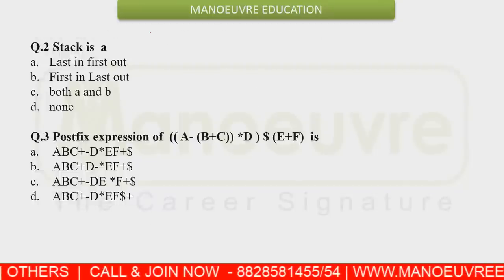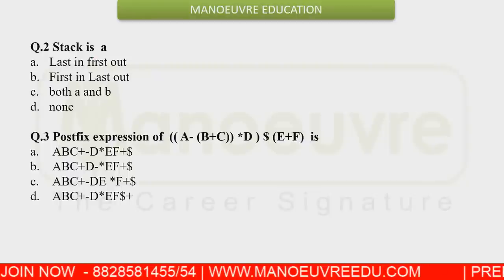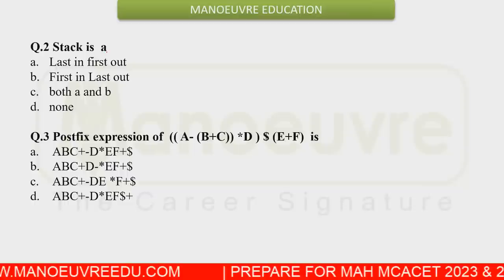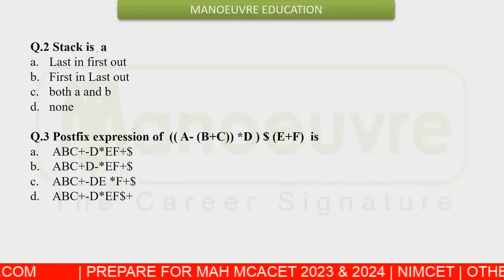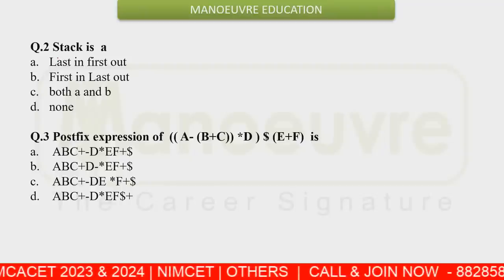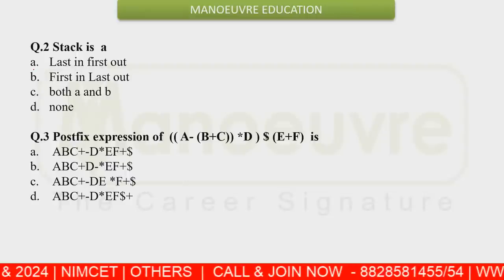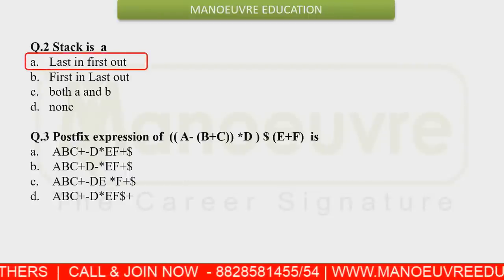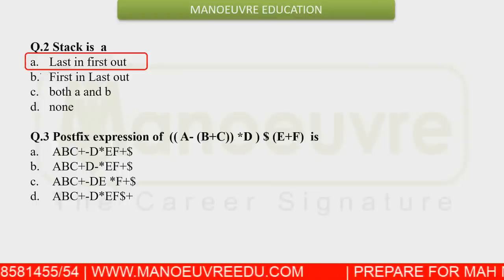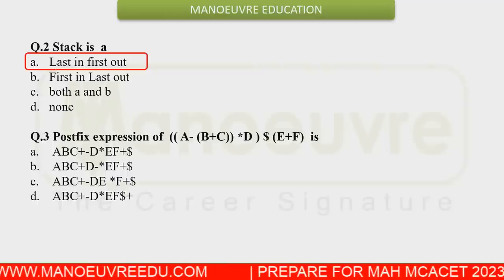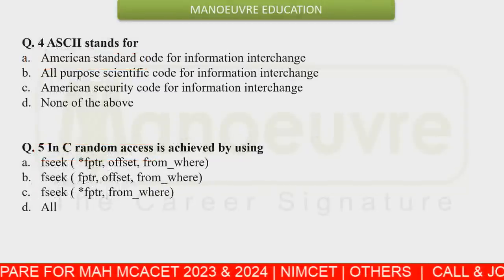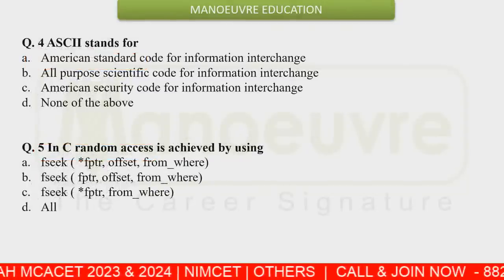The next question was about data structures. Apart from stacks, there are other data structures like queues and circular queues. They asked what type of data structure a stack is. Stack is a Last In First Out data structure, so the right answer is option A. There were also questions to find the postfix expression for a given expression, and the right answer for that is option E.